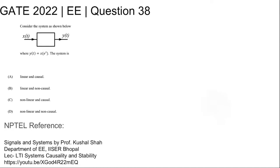This is GATE 2022 Electrical question number 38. Consider the system as shown below. x(t) is the input and y(t) is the output where y(t) = x(e^t). The system is: linear causal, linear non-causal, non-linear causal, or non-linear non-causal. Four options are given.